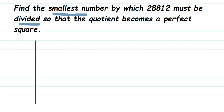So let's do the prime factorization of 28812. I'm going to start with the smallest even prime number, which is 2, because the given number is an even number. So 2 ones are 2, 2 fours are 8.